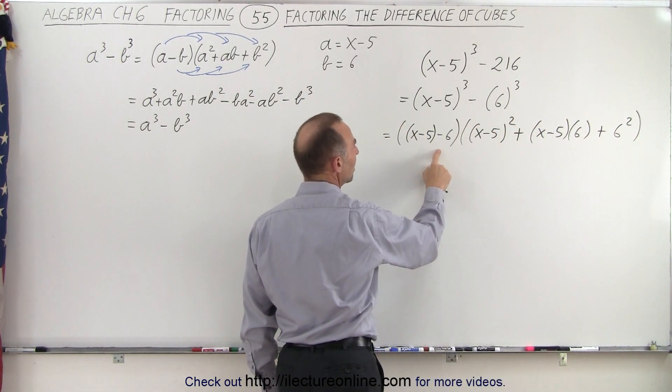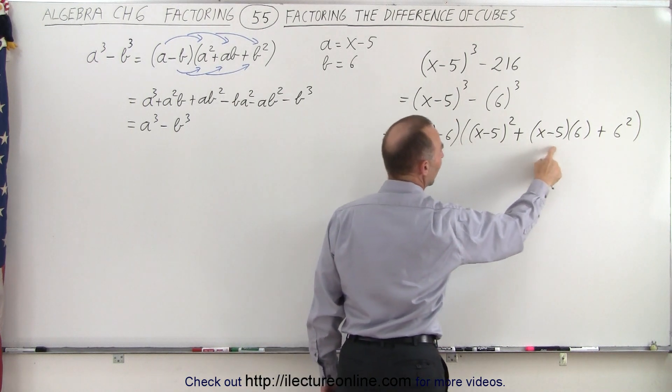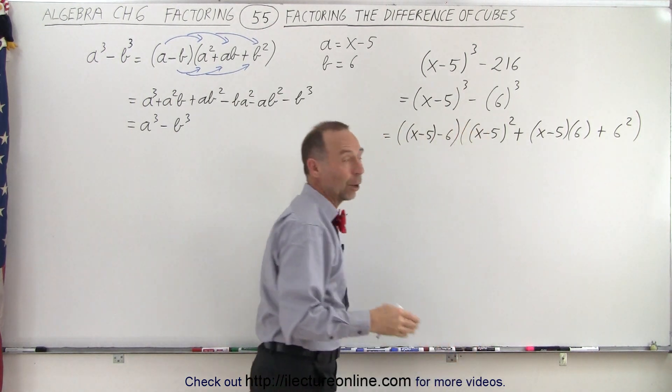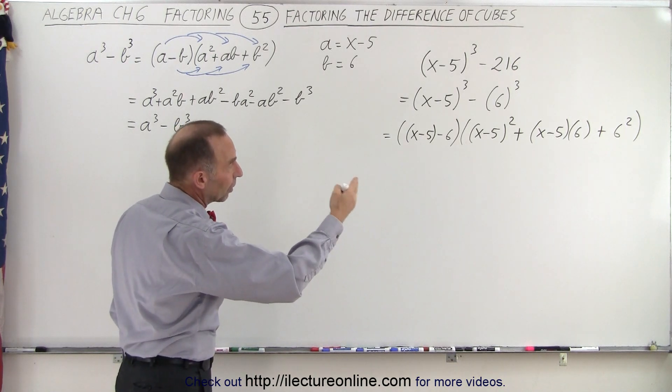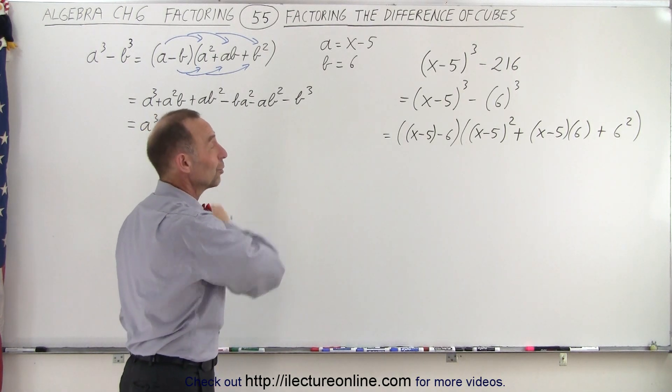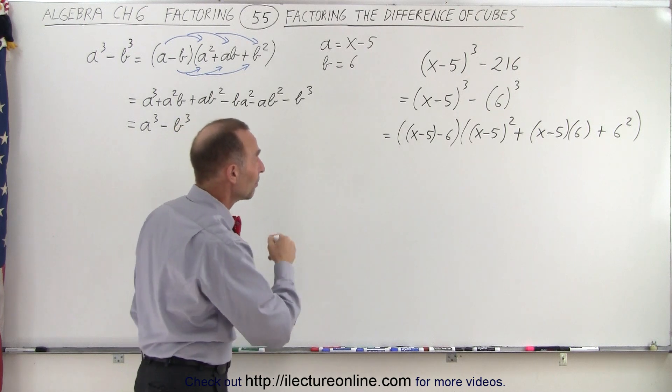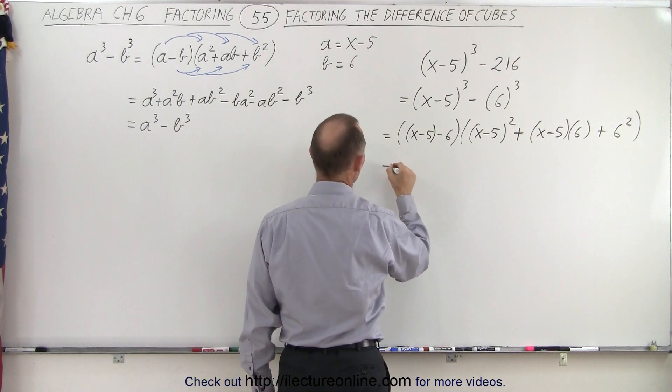So now we have a minus b, and a squared plus ab plus b squared, and all we have to do is simplify that. You can see that it's easier not to make a mistake when you do it like this. All right, let's combine everything and simplify.